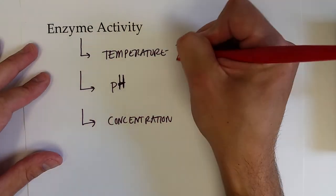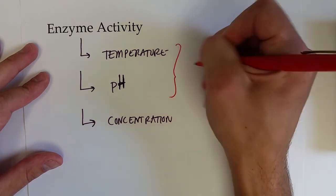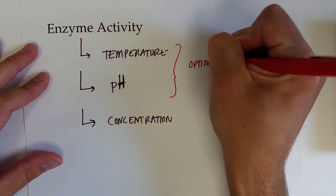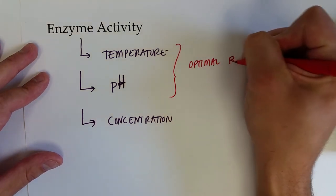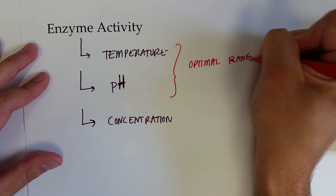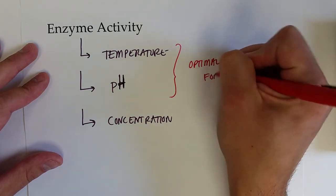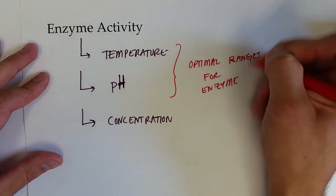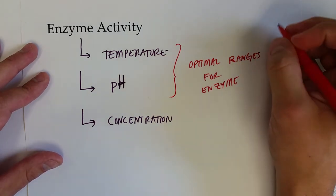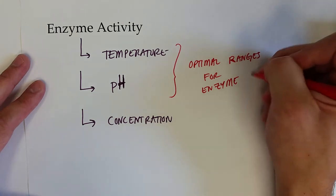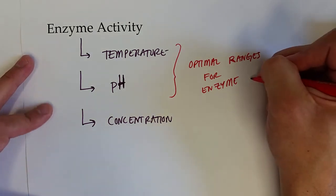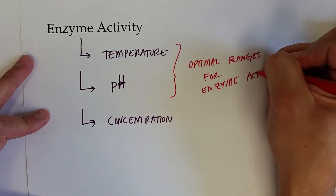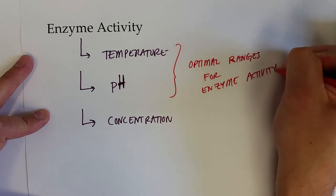For both the pH and the temperature, there are optimal ranges. Each enzyme will have a slightly different pH in which it is optimally catalyzing chemical reactions, and the same goes for temperature.